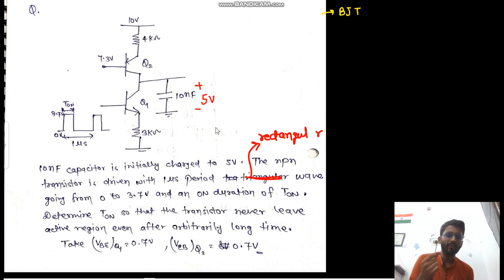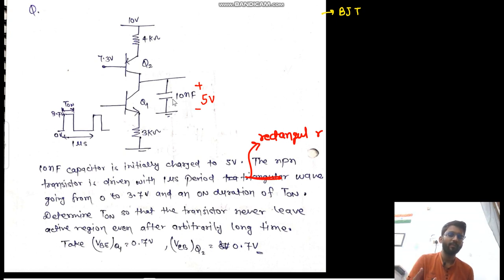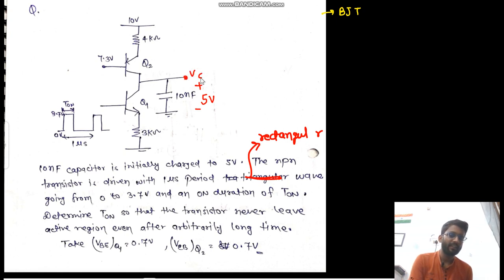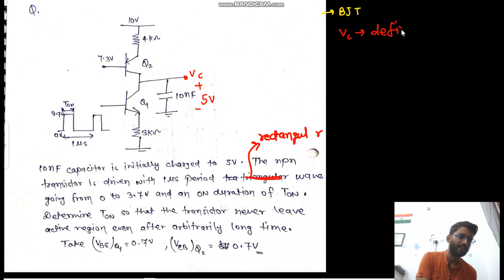Because of the changing input voltage — first it is 3.7 — there would be some different current here and some different current here. Because of T1 time, there would be some current flowing through the capacitor, and after T-off time, there would be some different current flowing through the capacitor. So this Vc value will define the region of operation.